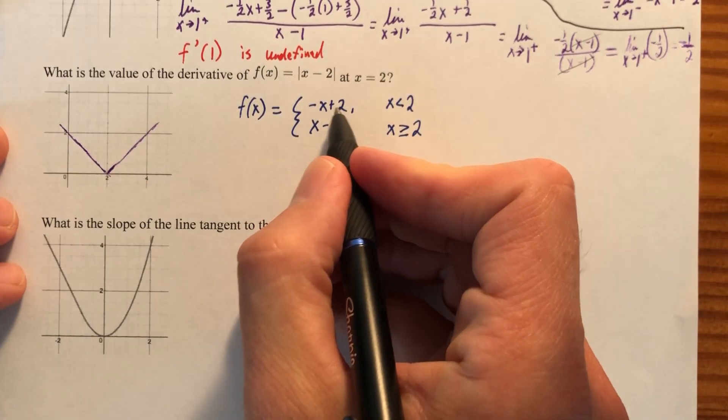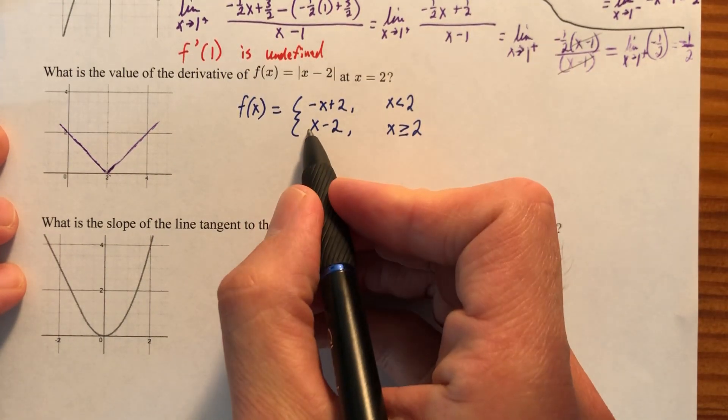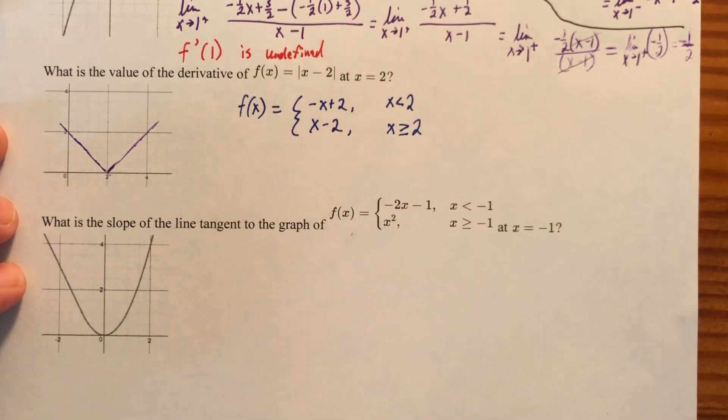What's the slope of this line? Negative one. What's the slope of this line? Positive one. They don't match up.